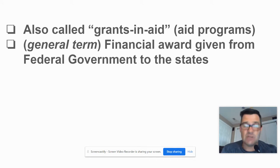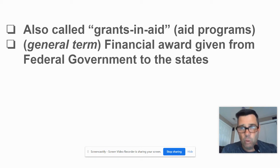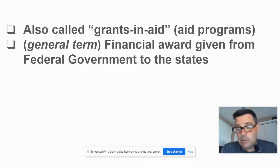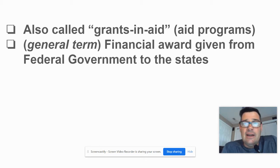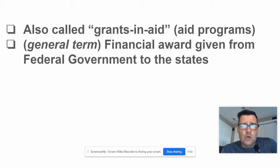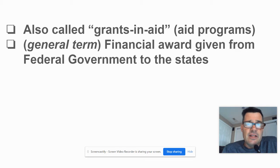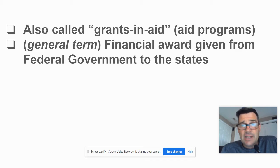There are specific types of grants we'll look at, but this is a generic term — it just means some sort of financial award given from the federal government to the states. For example, one of the most famous ones is highway grants. In the early 1980s, the federal government said that if you want highway grants, states, then you must raise your drinking age to 21. If you don't raise it to 21, then you don't get the grants.